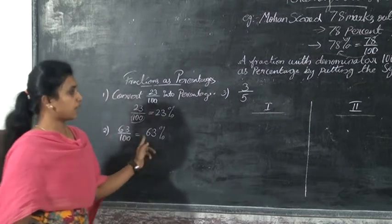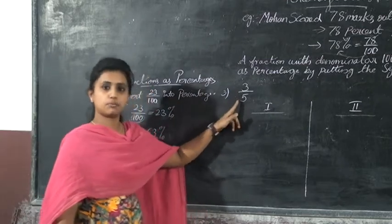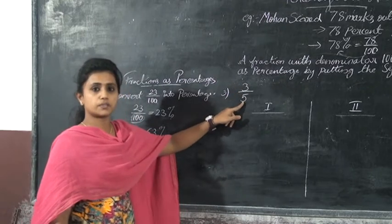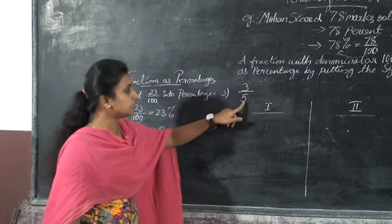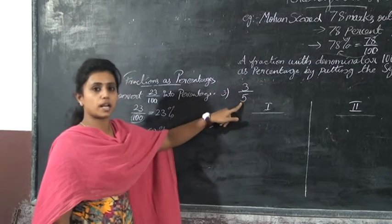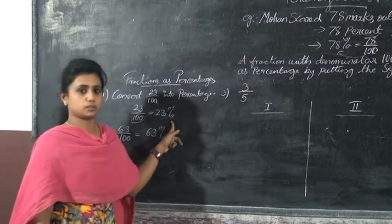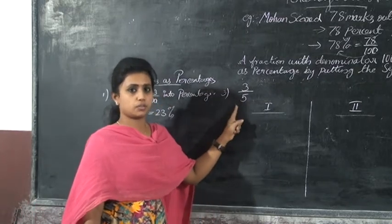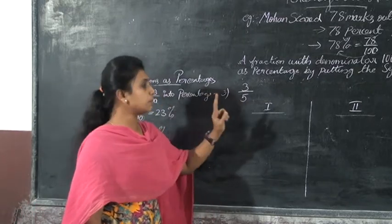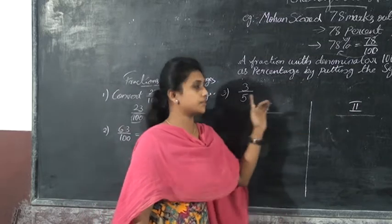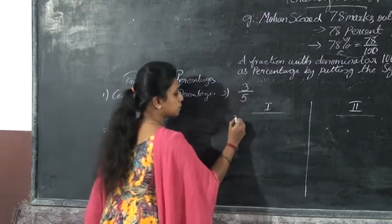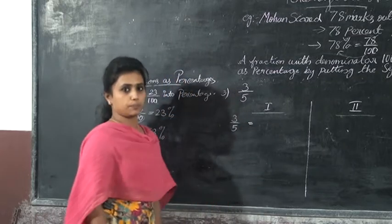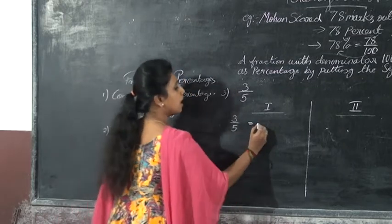Now look at this fraction: 3 by 5. Can you convert this into a percentage? Here you can see that the denominator is not hundred. You want to convert this denominator into hundred. The first method is to convert the fraction 3 by 5 into an equivalent fraction with denominator 100.